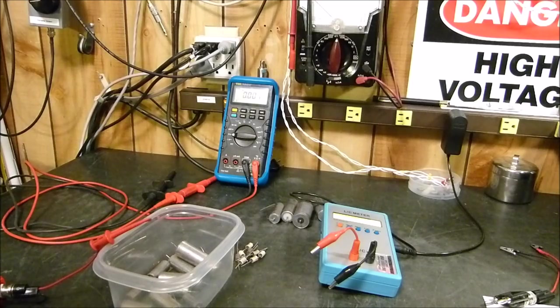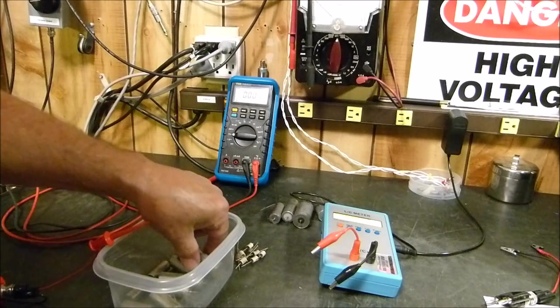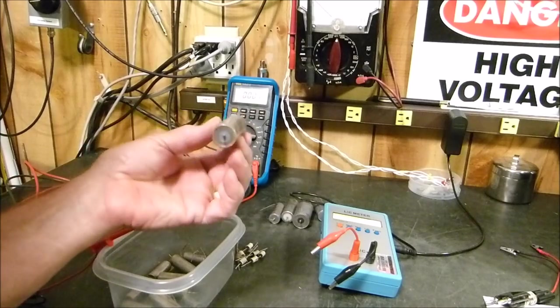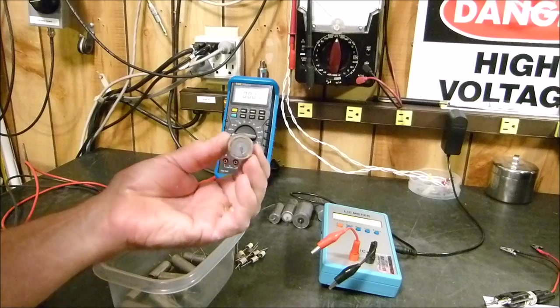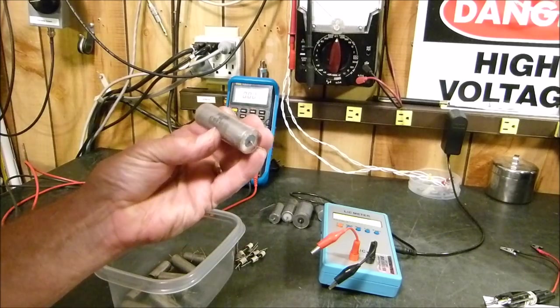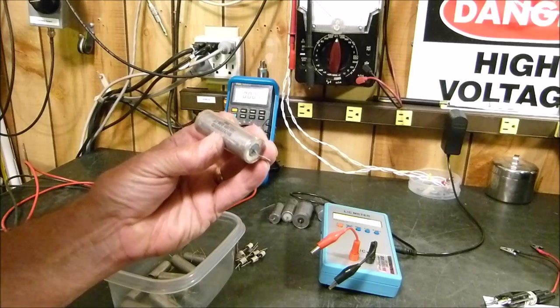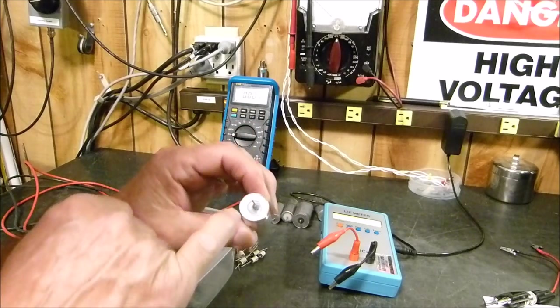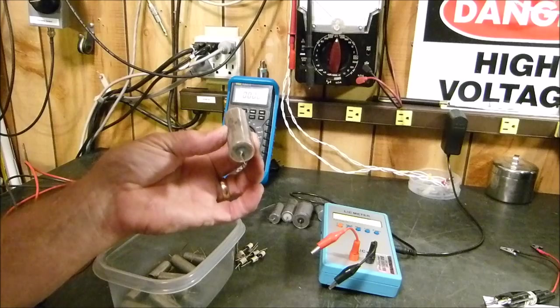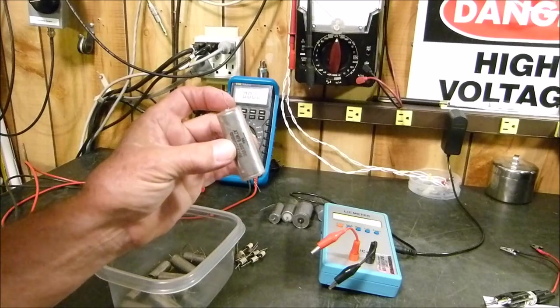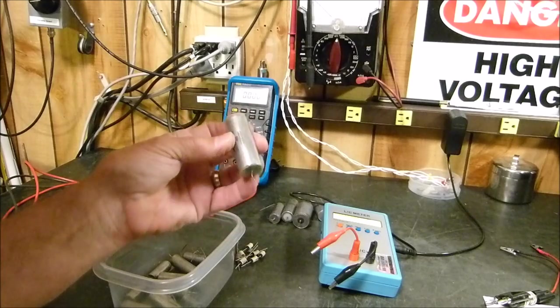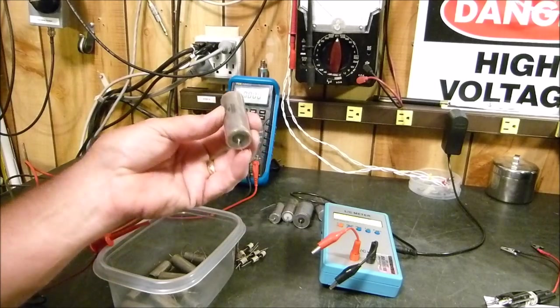One is things I've experienced before when you take capacitors that have been laying around for decades that may very well still be good. Look at these guys right here, these Sangamo USA .47 400 volts. They're sealed in plastic and I find pretty much every one is still very good. I know some people have the philosophy of if you're going to check a capacitor, just replace it.